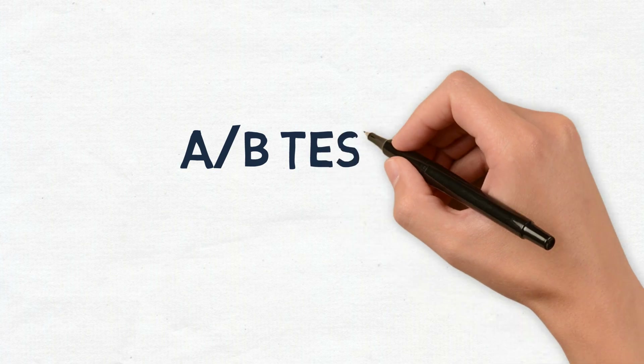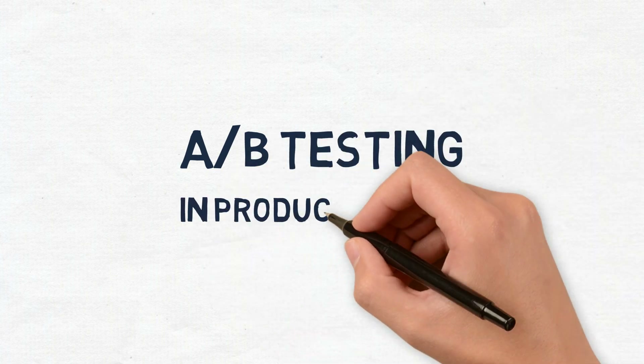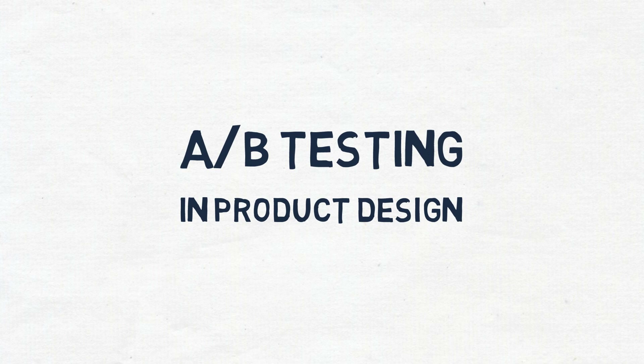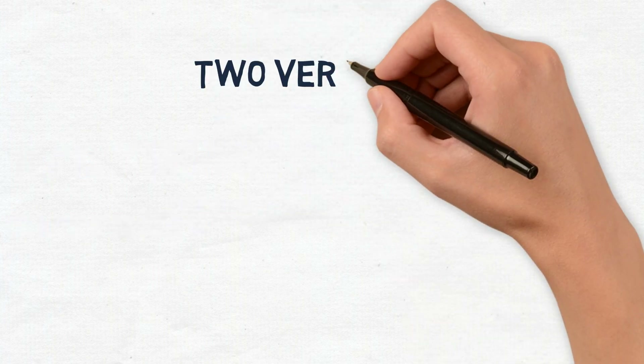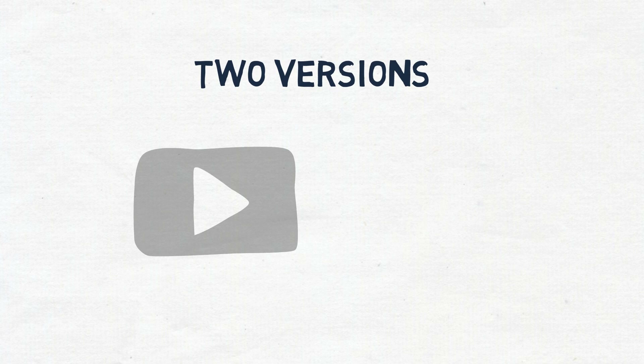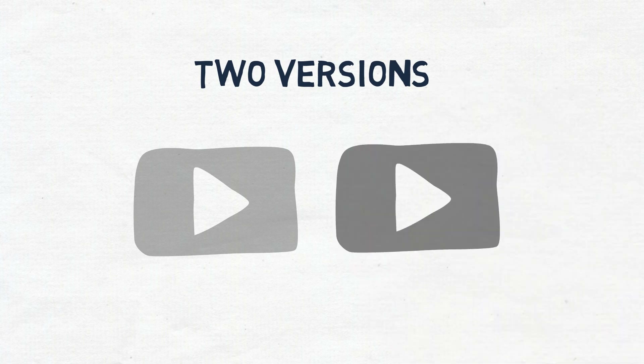In this video, I'm going to be talking about A-B testing, specifically in product design. A-B testing is also popular in marketing, but we are going to focus on its applications in product design. A-B testing, also known as split testing, is when you compare two versions of a design to see which one performs better.